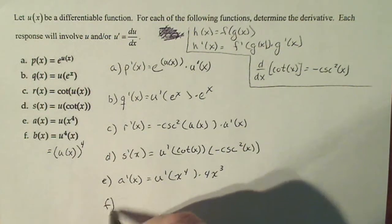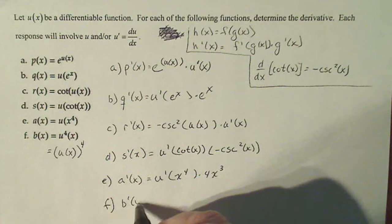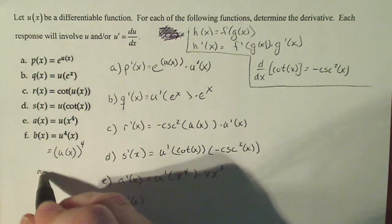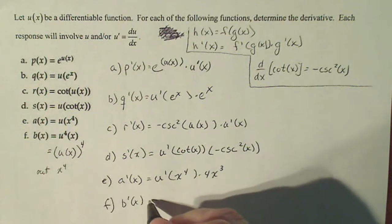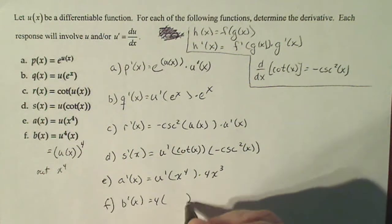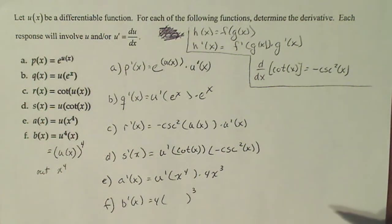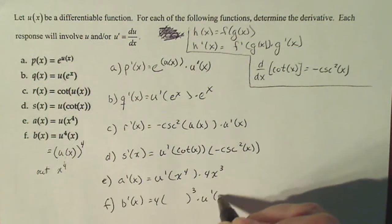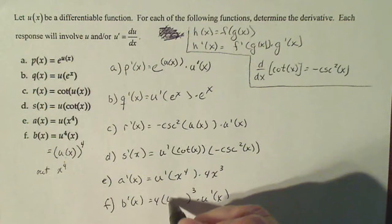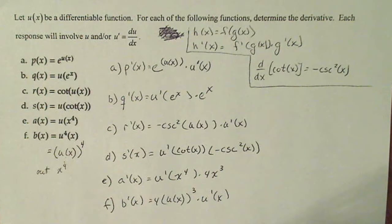So the derivative of the outside, if the outside here is x to the fourth, the derivative will be four x to the third times the derivative of the inside, u prime, and the original inside inside the derivative of the outside.